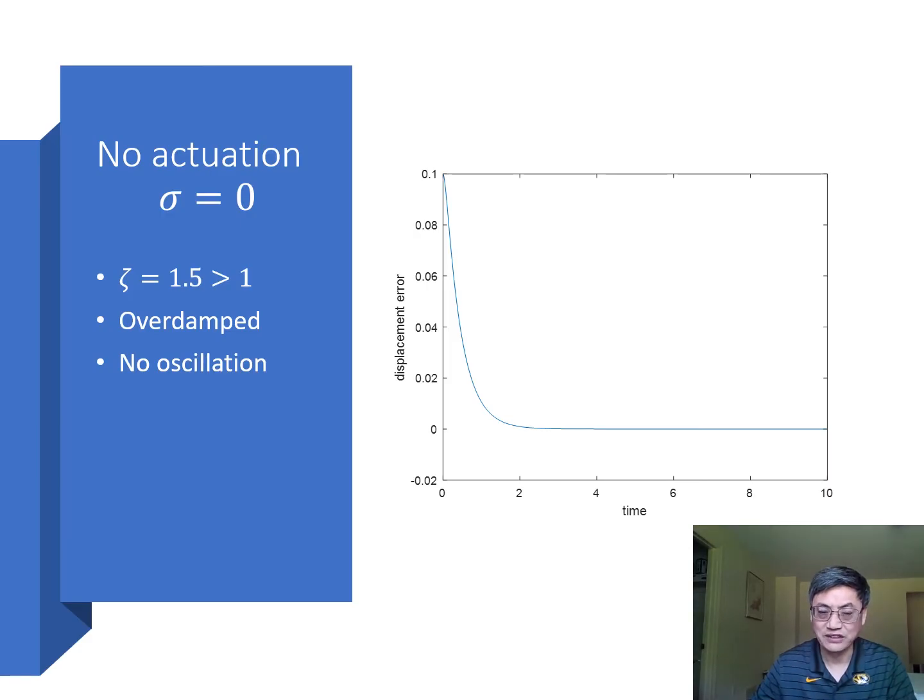First, without the feedback gain, in other words, the actuator is not connected without actuation. There's no force from the actuator. Obviously you have a dashpot which will damp out the energy and bring the system into equilibrium.